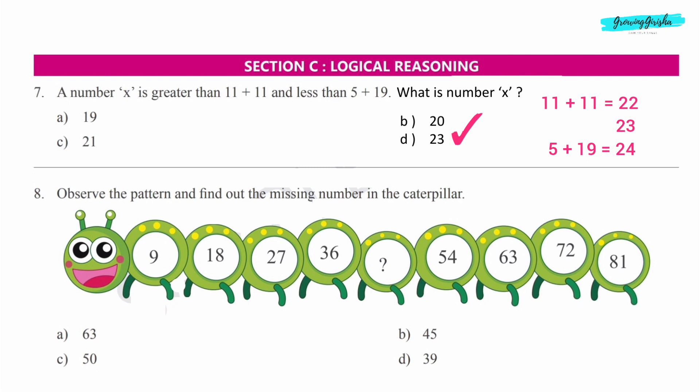The given pattern shows the table of 9. 9 times 1 is 9, 9 times 2 is 18, 9 times 3 is 27, 9 times 4 is 36, 9 times 5 is 45.